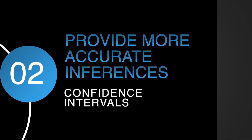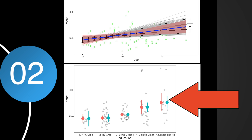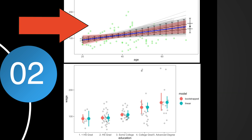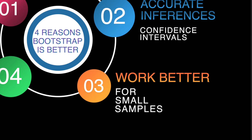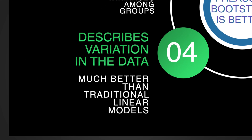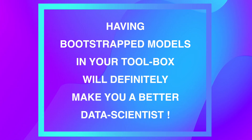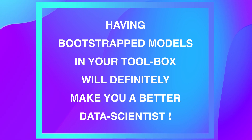Secondly, bootstrap models provide more accurate inferences — for example, confidence intervals — which we will soon prove on two examples: one with a categorical and one with a numeric predictor. Bootstrap models also work better for small samples. And finally, bootstrap describes variation in the data much better than traditional linear models. Therefore, having bootstrap models in your toolbox will definitely make you a better data scientist.